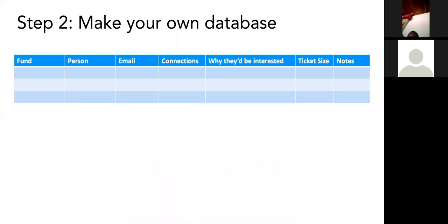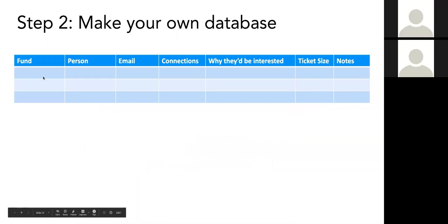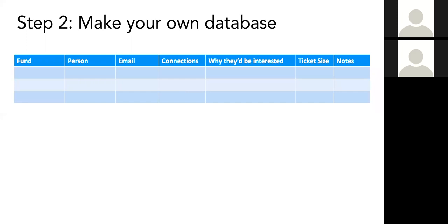The second step is to make your own database. You don't want to use that big spreadsheet with lots of companies that will never invest in you. Keep your own database — Google Sheets is a great way to do it because you can share it with your co-founders. You want to keep notes on the fund, the person, their contact information, and then figure out how you're connected to them, because most investors ignore cold emails. If you don't know an investor personally, he's probably not going to take your email, meet with you, or invest in your company. So you want to find people you know who know your targets, so they can make a warm introduction for you.